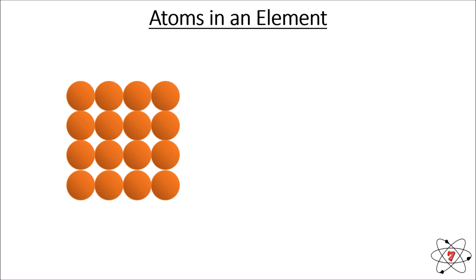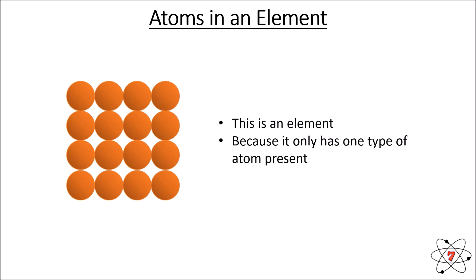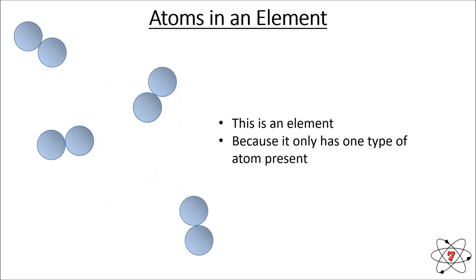Let's look at what atoms are and how we find them in elements. Looking at the picture, we have a very simplified model of what atoms can look like. All of these atoms are the same, so this is an element — it only has one type of atom present. In another example, the atoms are in pairs, but there is still only one type of atom present, so it is still an element.